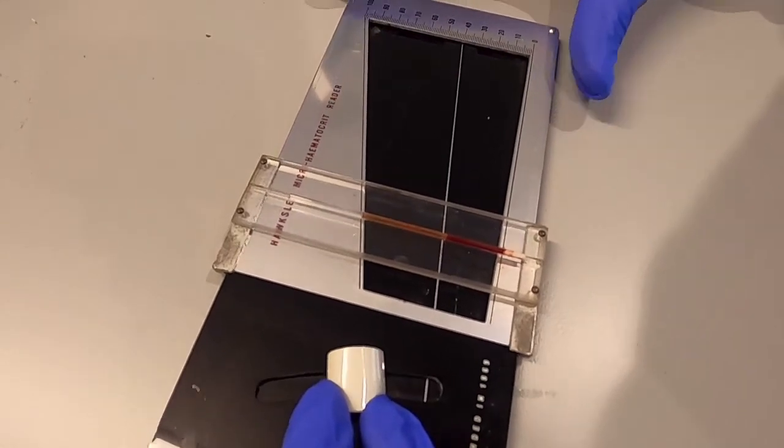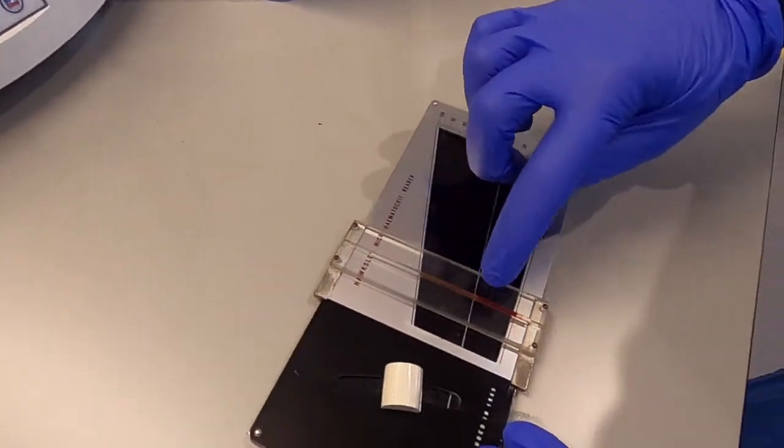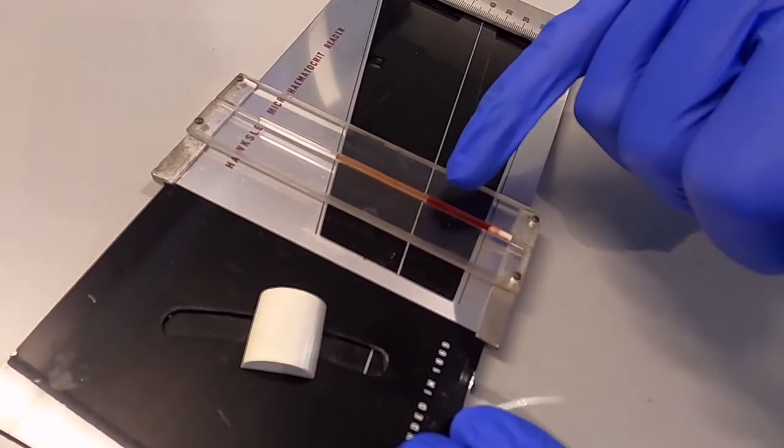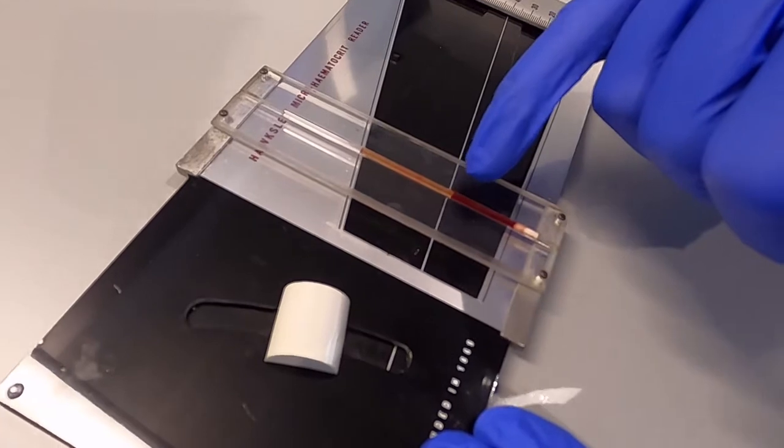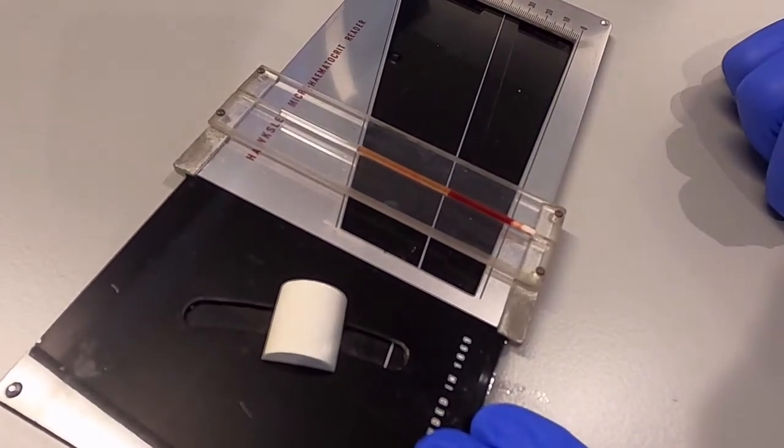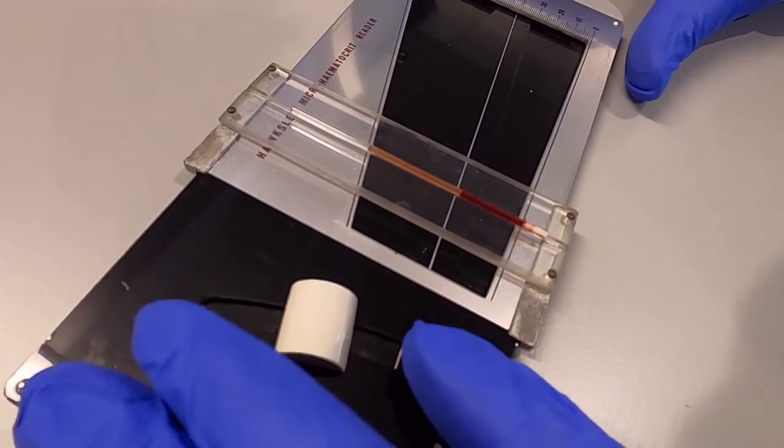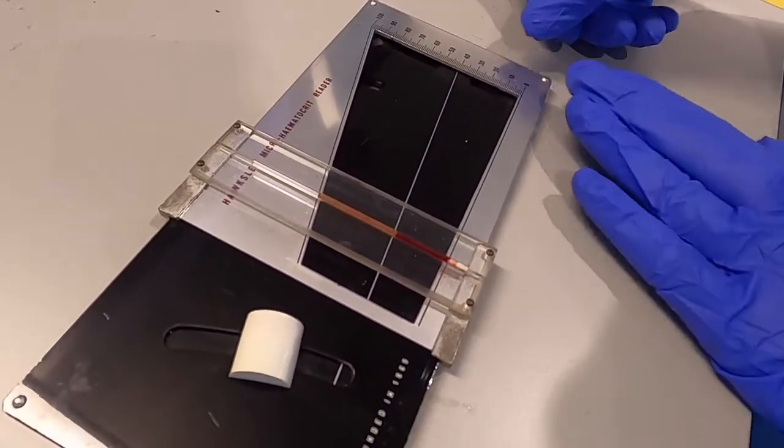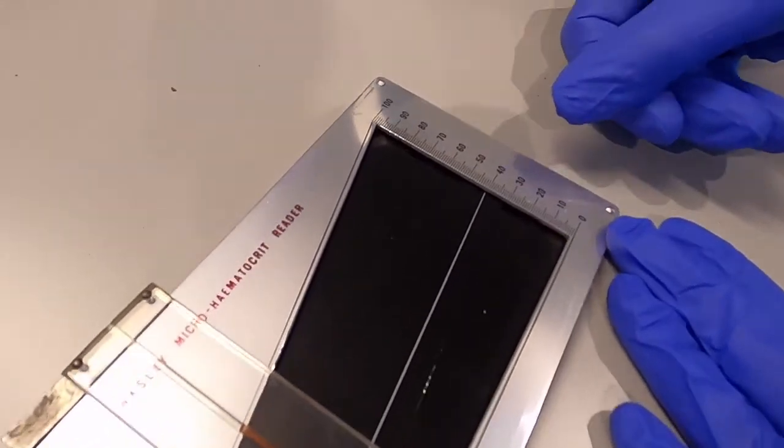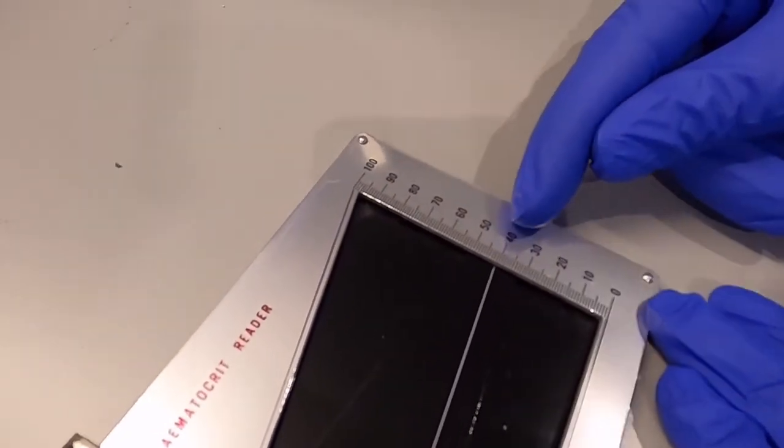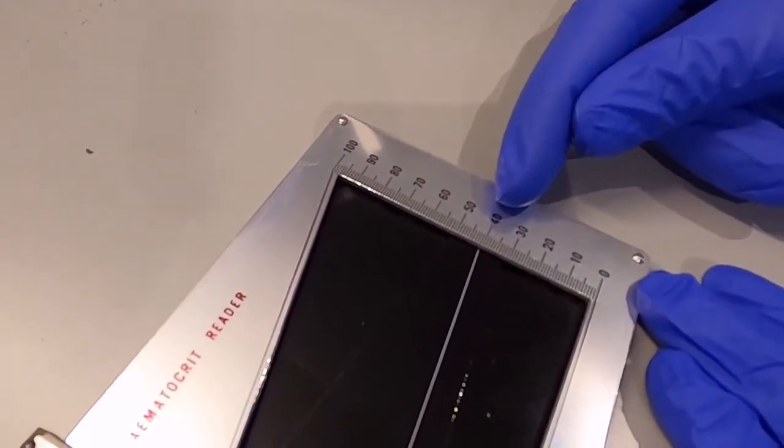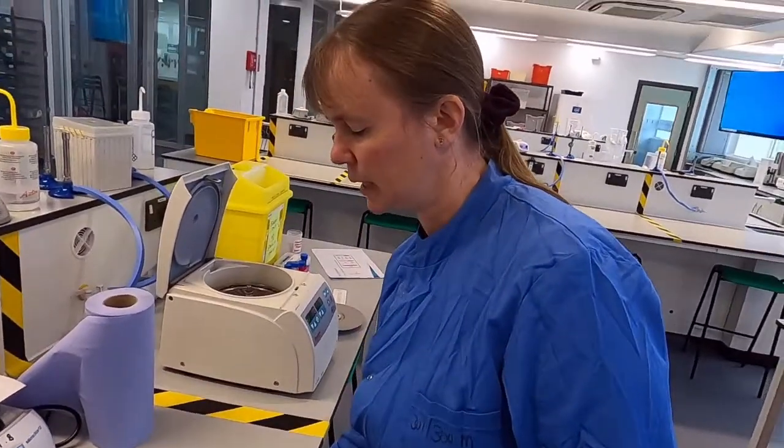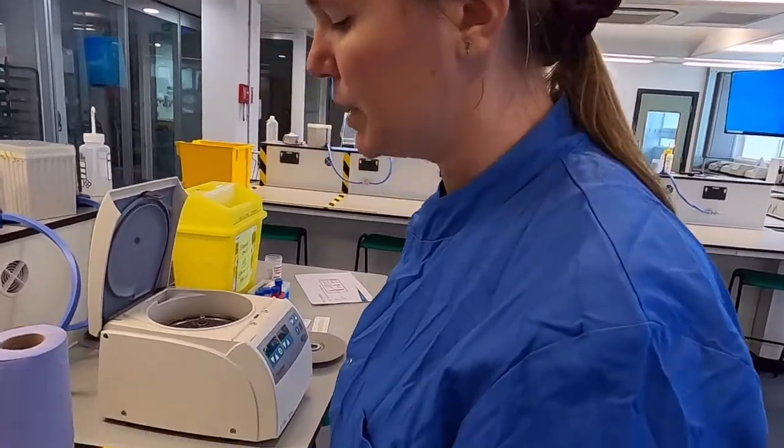So our blood has separated into our plasma layer. We have our red cells at the bottom here and our white cells, our leukocytes, will be a very fine layer on the top of these red cells. It's very hard to see. So we now need to measure where this silver line comes across on this measurement scale and it's coming across as 40. So our hematocrit measurement for this particular sample is 40%.